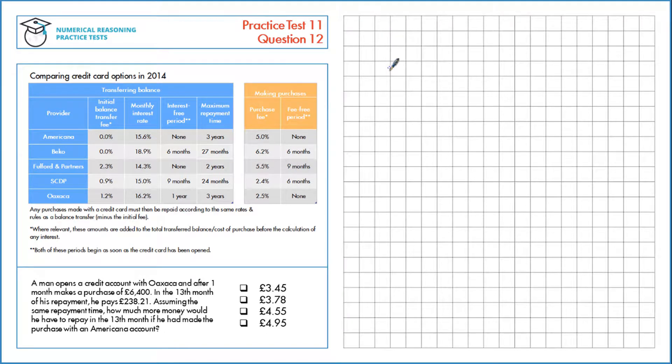A man opens a credit account with Oaxa and after one month makes a purchase of £6,400. In the thirteenth month of his repayment, he pays £238.21. Assuming the same repayment time, how much more money would he have to repay in the thirteenth month if he had made the purchase with an Americana account?